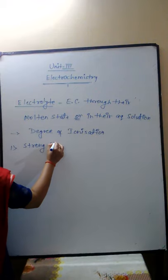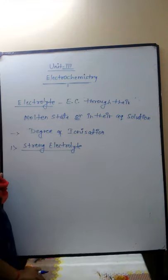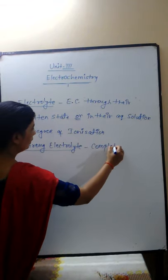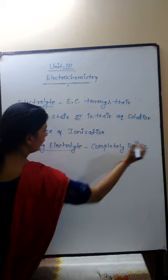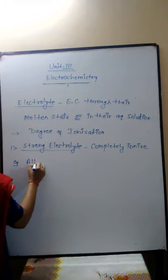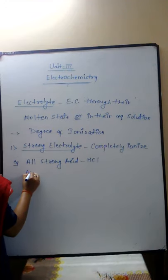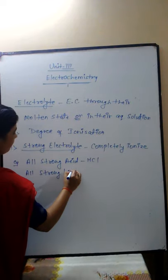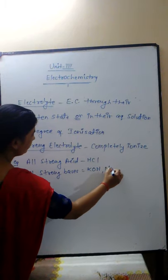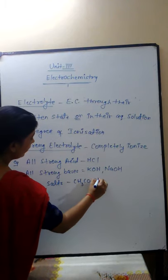First is called strong electrolyte, and second is called weak electrolyte. Strong electrolytes are those substances which are completely ionized in their aqueous solution. Their conductance is higher because the number of ions is greater. Examples include all strong acids like HCl, all strong bases like NaOH and KOH, and their salts such as sodium acetate.